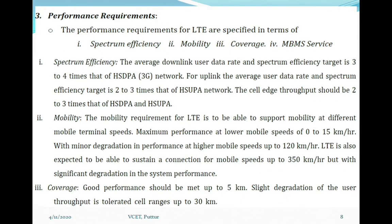The third design principle is performance requirements, specified across four factors. For spectrum efficiency, the average downlink user data rate and spectrum efficiency target is three to four times that of UMTS, and the cell edge throughput, measured at the fifth percentile, should be two to three times that of both downlink and uplink.